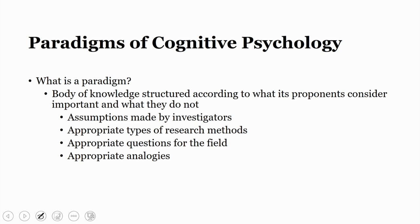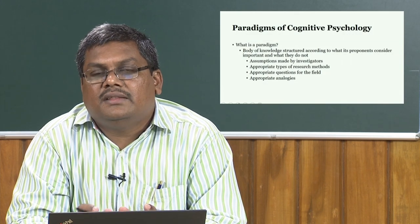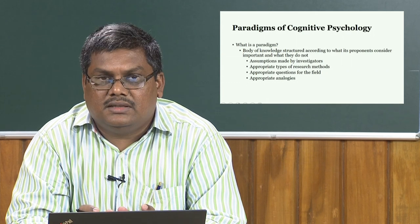There are certain paradigms to the study of cognitive psychology. A paradigm is a body of knowledge structured according to what its proponents consider important. These paradigms represent assumptions made by investigators, and using a particular paradigm leads to a set of assumptions, appropriate types of research methods, and new questions in the field. Studying the same mental processes through different paradigms gives us different research methods and also generates new analogous problems.